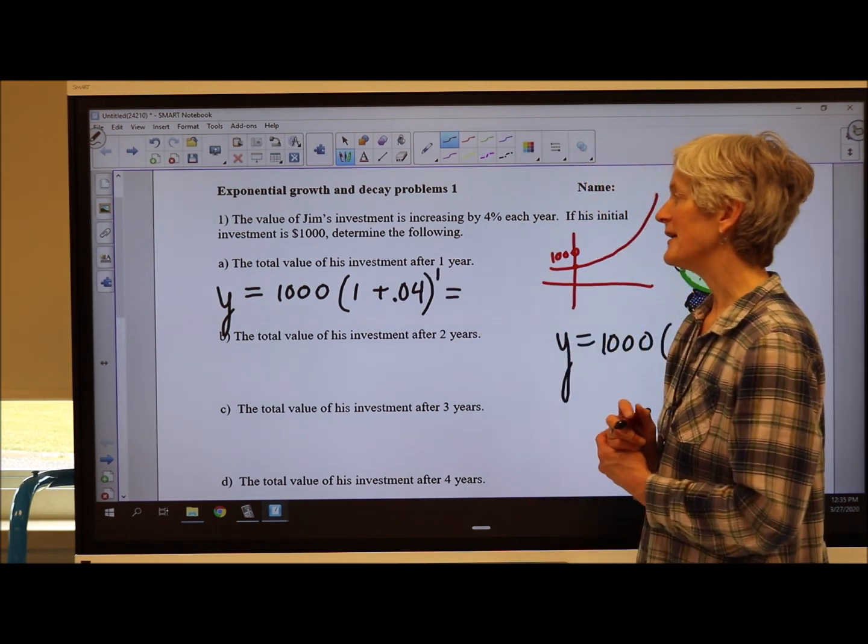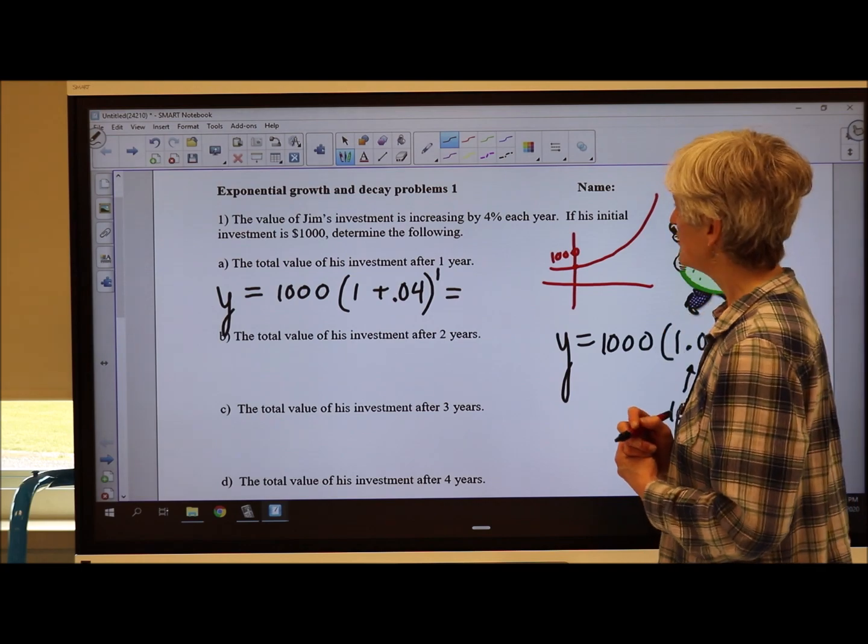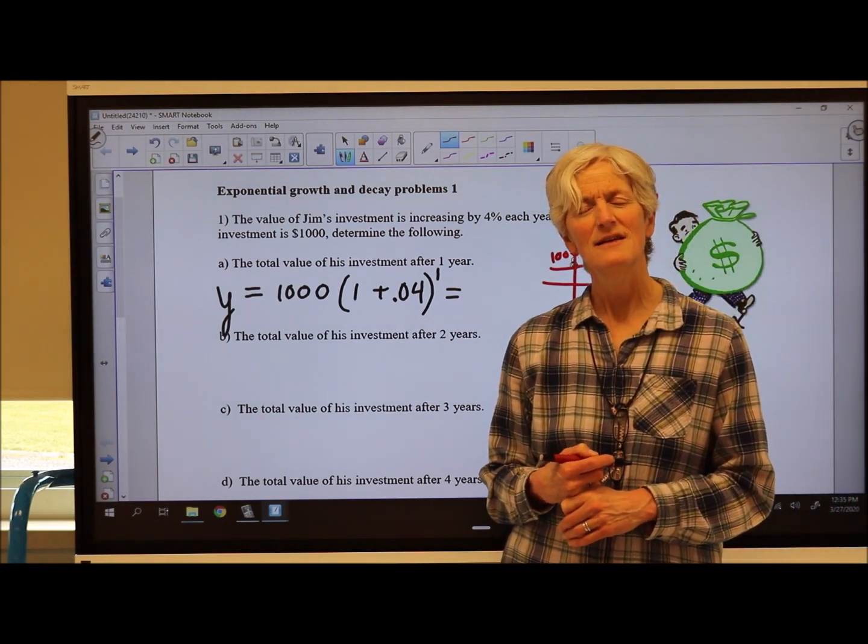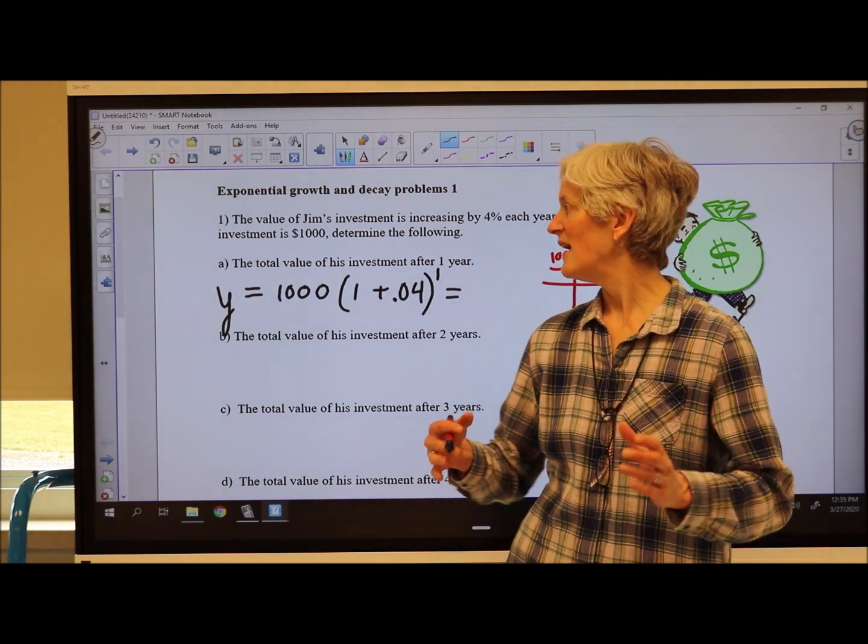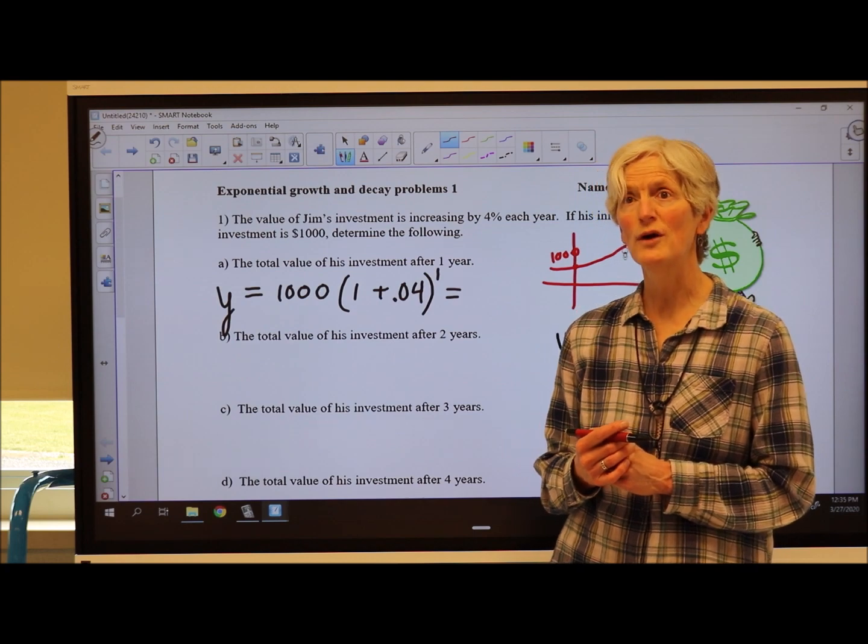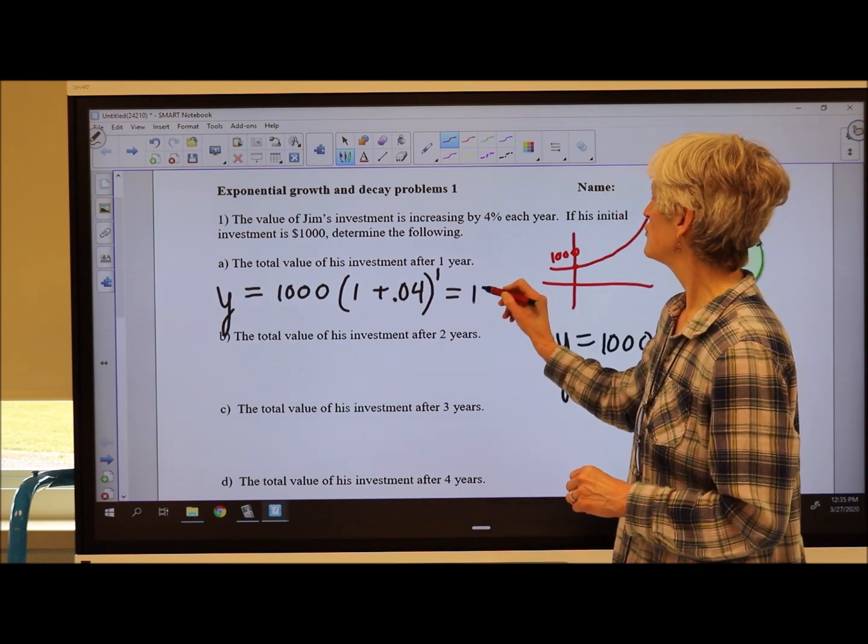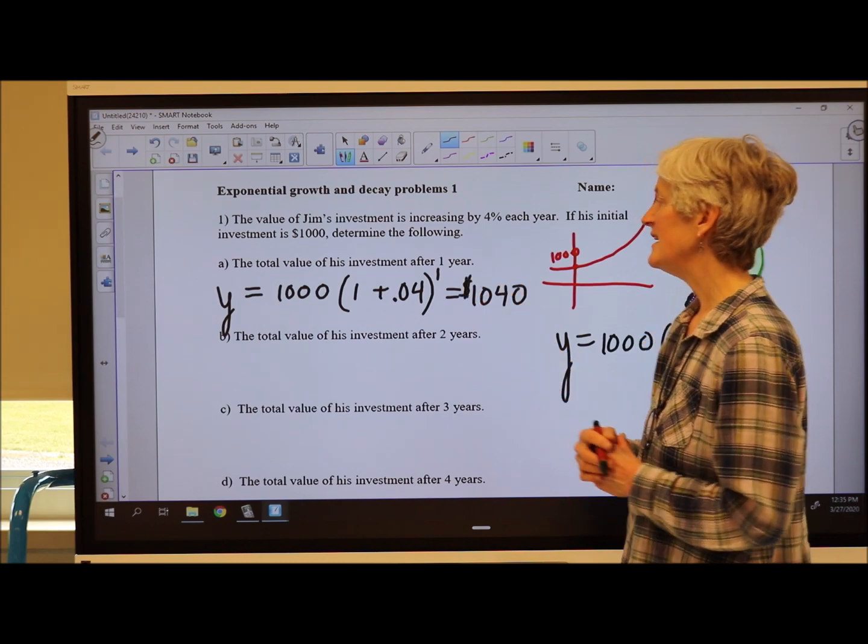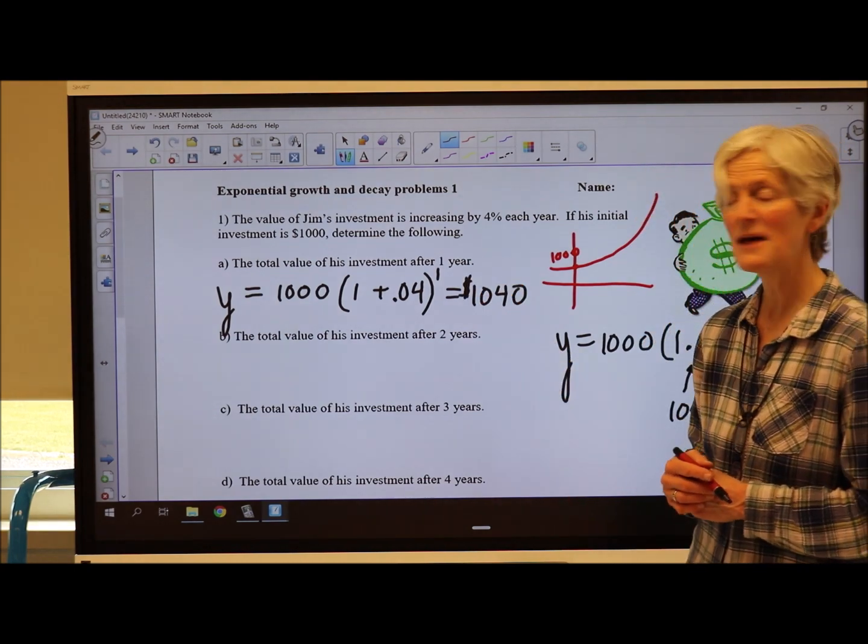You can do this in your calculator, or you can think, let's see, 4% means 4 for every 100. So he has 1,000, so that's going to be 40 extra dollars. So it should be $1,040 after one year. Does that make sense?